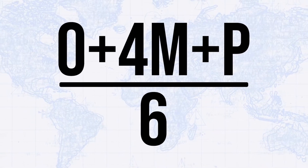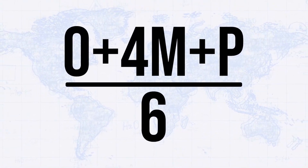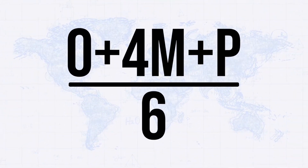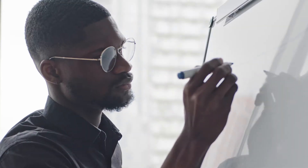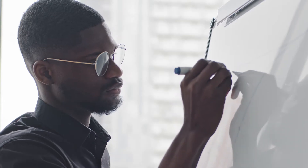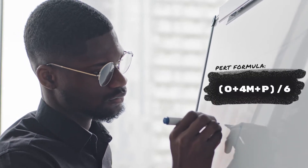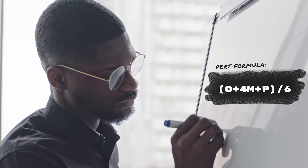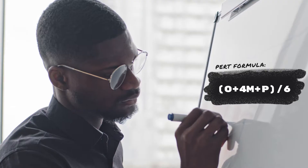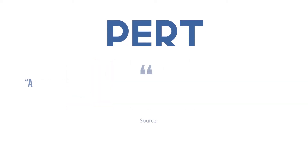The PERT calculation is a widely used formula to approximate task duration or cost in projects, particularly those where the estimates are uncertain, because PERT allows you to input specific values for each of your tasks. The Project Management Institute defines PERT as a formal technique used in project planning.